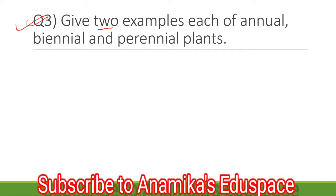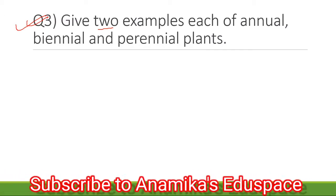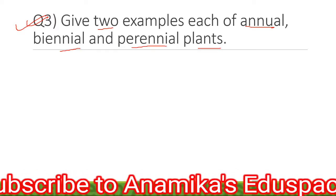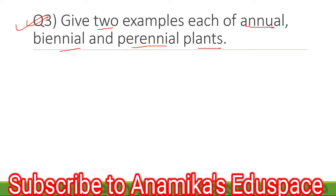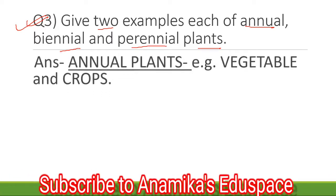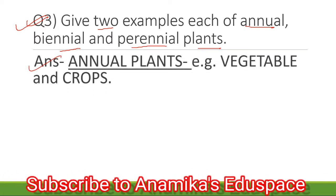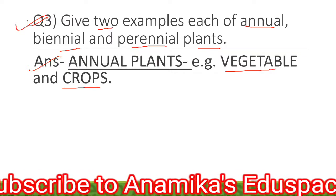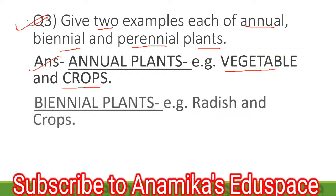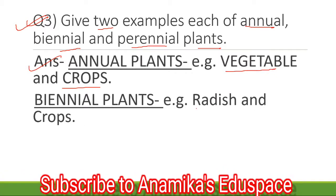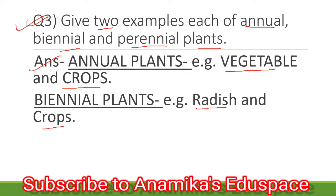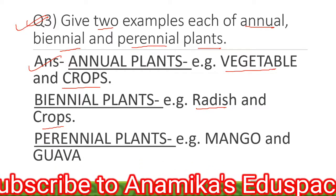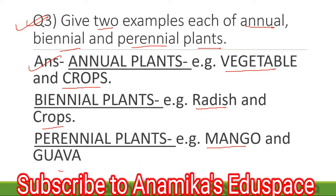Give two examples of each of the annual, biennial, and perennial plants. The answer goes as: Annual plants — for example, vegetables and crops. Biennial plants — for example, radish and crops. Perennial plants — for example, mango and guava.